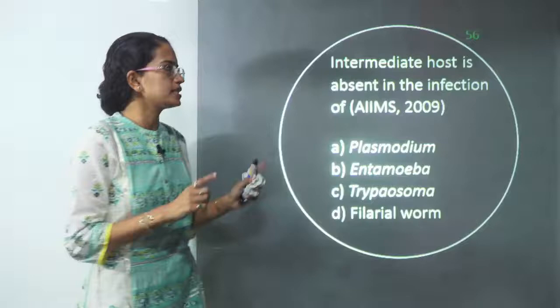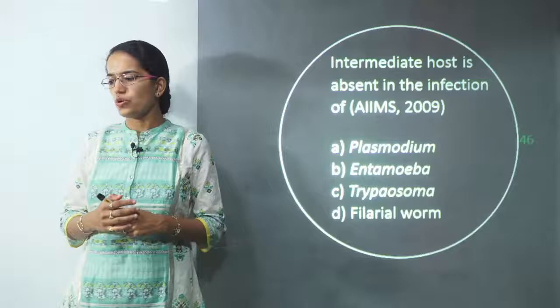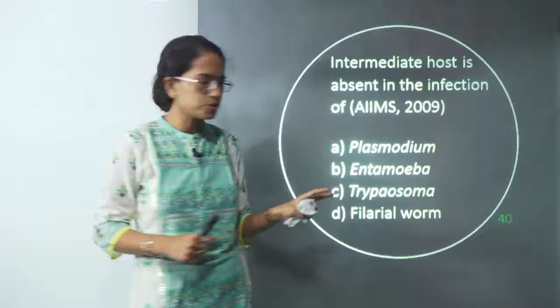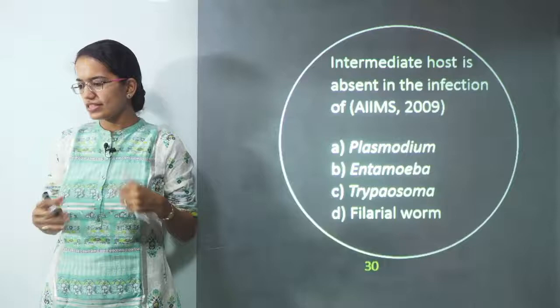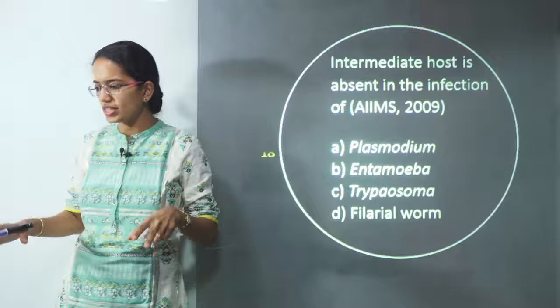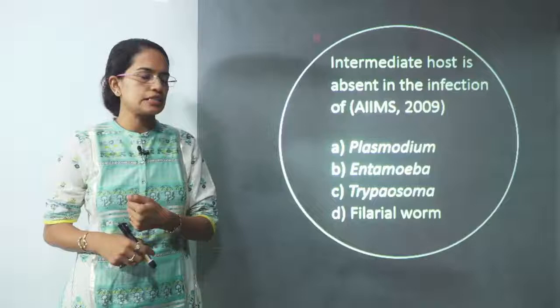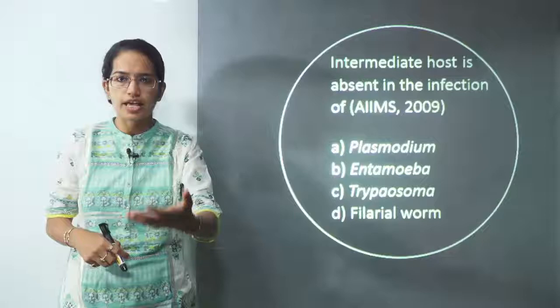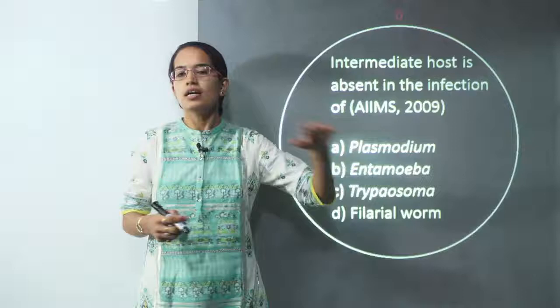The question asks: the intermediate host is ABSENT in the infection of — read carefully, it asks about absent. Filarial worm has an intermediate host which is an arthropod. Plasmodium has Anopheles as an intermediate host. Trypanosoma has tsetse fly as an intermediate host. However, Entamoeba histolytica, which causes amoebiasis, does not have any intermediate host. So B — Entamoeba — is the correct answer.